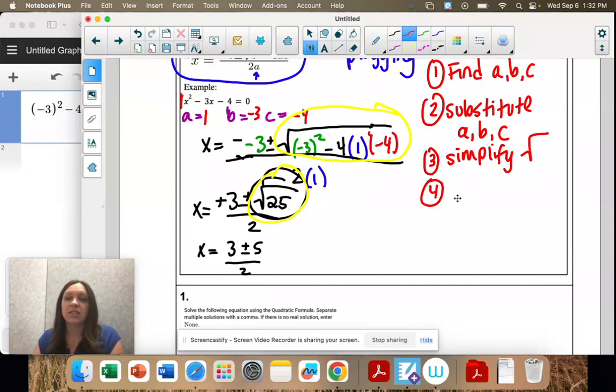And our next step is to split the plus or minus, just like we did before. So I have 3 plus 5 divided by 2, 3 minus 5 divided by 2.